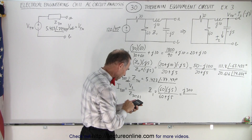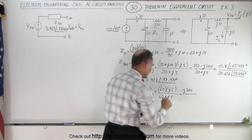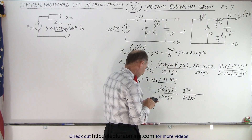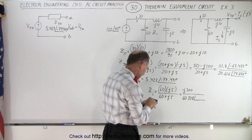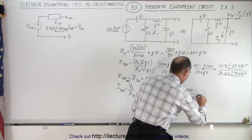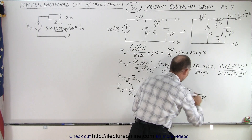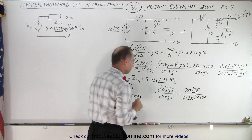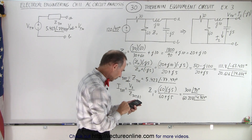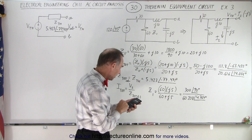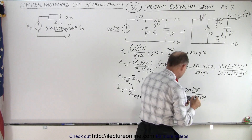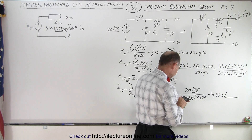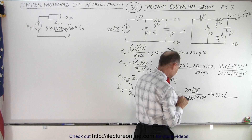Converting the denominator to magnitude and phase: square root of 3600 plus 25 equals 60.208, with a phase angle of inverse tangent of 5 over 60 = 4.764 degrees. The numerator 300 has a phase angle of 90 degrees. So Z1 equals 300 divided by 60.208 = 4.983, with a phase angle of 90 minus 4.764 = 85.236 degrees.